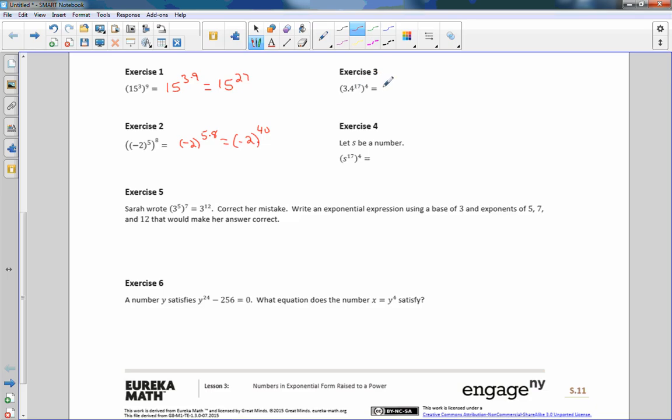In exercise 3, our base is 3.4. Our base is going to stay 3.4. We're going to take the power of 17 and multiply it by 4. So it's going to reduce to 3.4 to the 68. So it's 3.4 to the 68.